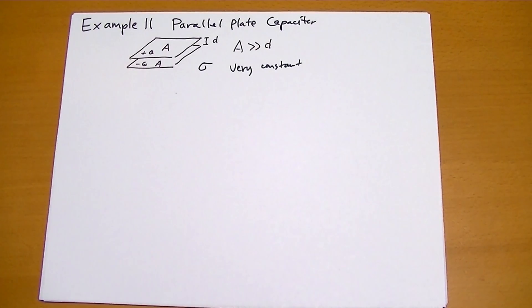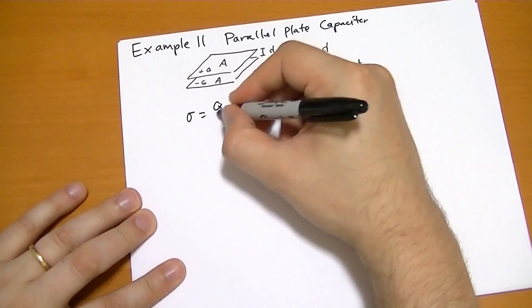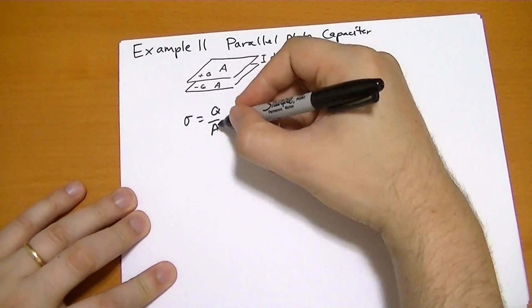So basically, sigma is going to be equal to the charge on a plate divided by the total area of that plate, Q over A.